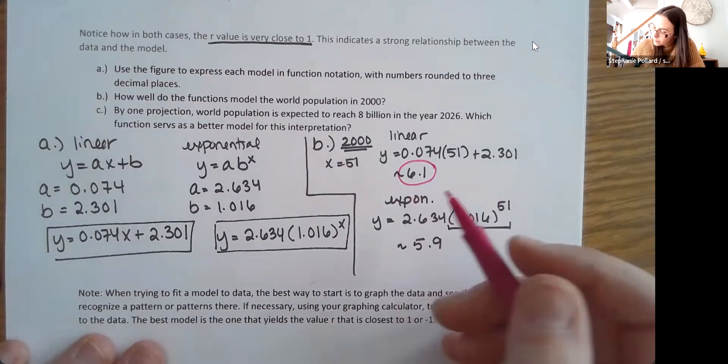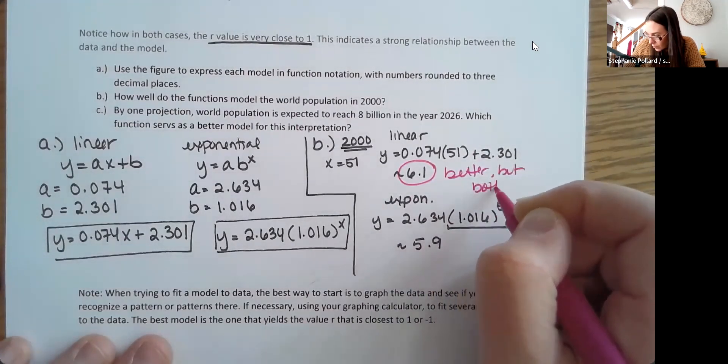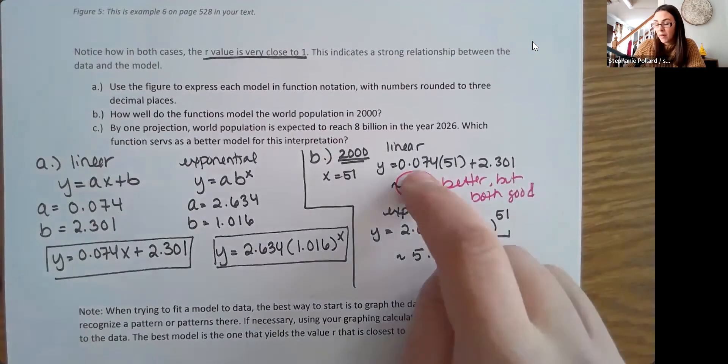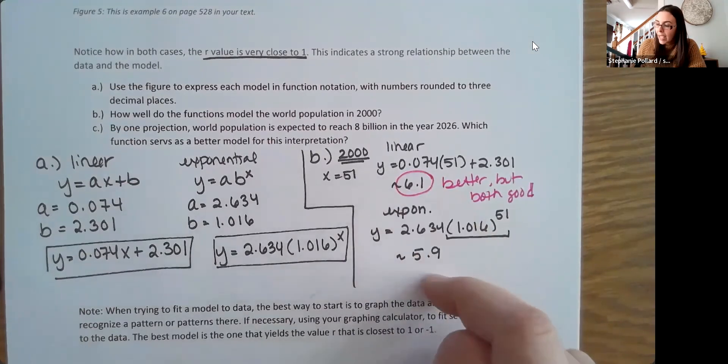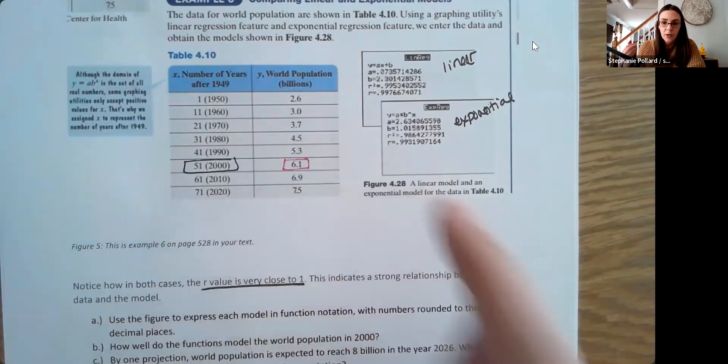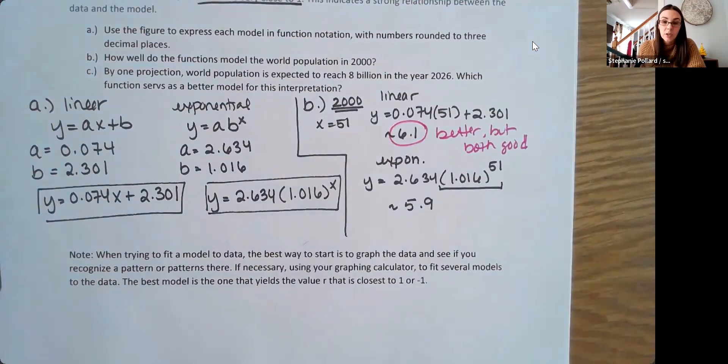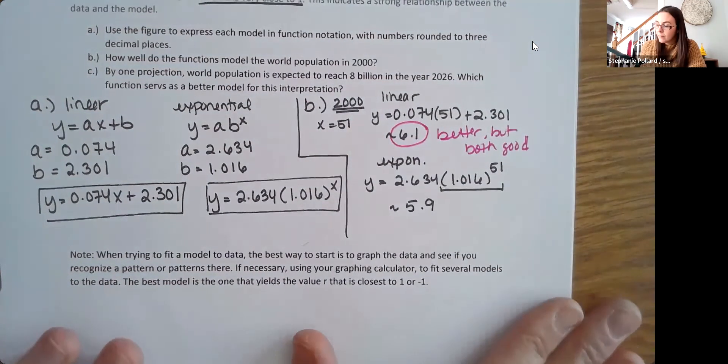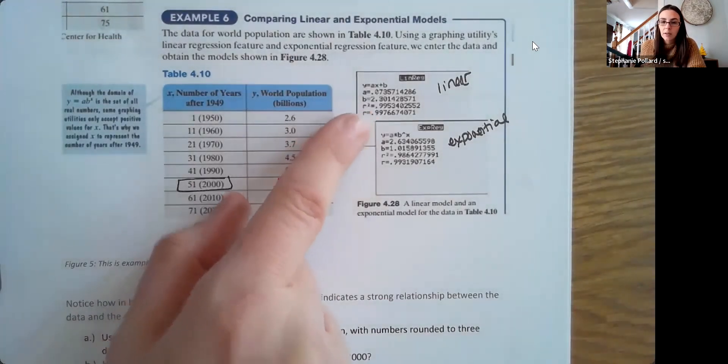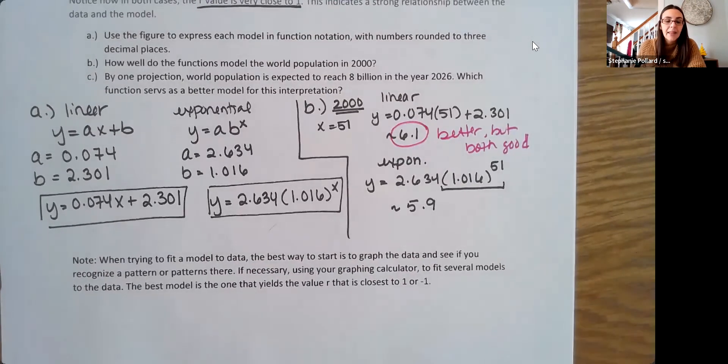Okay, so they are actually both very good models. Again, both of these values are very close to 6.1, and they also both have very high R values, very close to 1. So they're both good models. But this one's a little bit better, right? So it looks like the linear does a slightly better job of modeling that data. And you can see that at the R too. That R is just a little bit higher here. So that linear model is just a little bit more on track there with those data points.